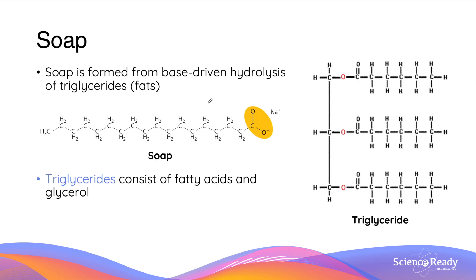Let's start with soaps. Soap is formed from a reaction called base-driven hydrolysis of triglycerides, which is a scientific name for fats. An example of a soap molecule is shown here. Triglycerides are large molecules of fats that consist of two parts: fatty acids and glycerol.